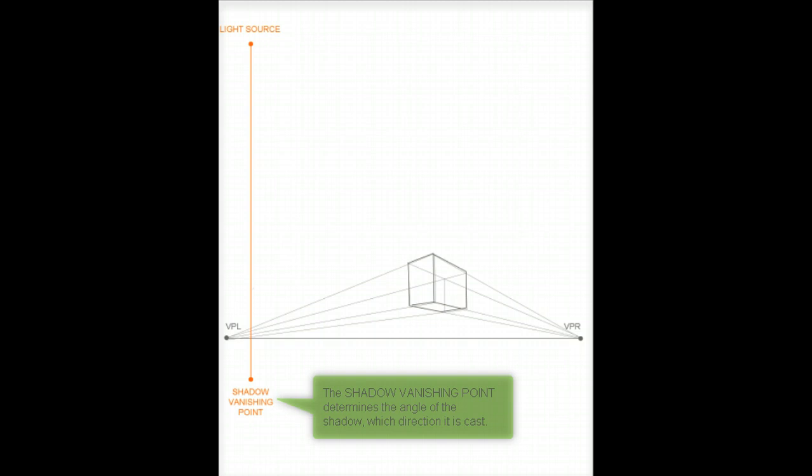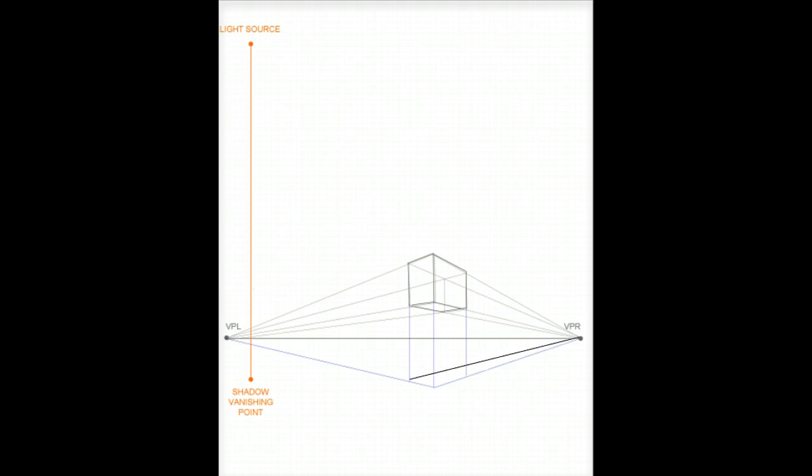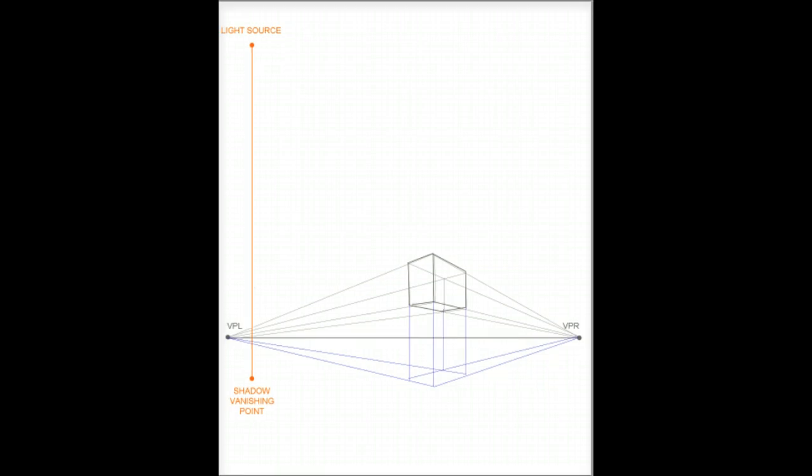So the shadow vanishing point is going to go through the bottom edges of the object to determine the angle. Now because this box is floating, we want to actually pull these edges down to the ground plane to determine where this box would touch the ground if it were. And basically what that visually does is it elongates the box, it creates kind of visually a long box. But this gives us points on the ground where this box would be touching if it were sitting on the ground.